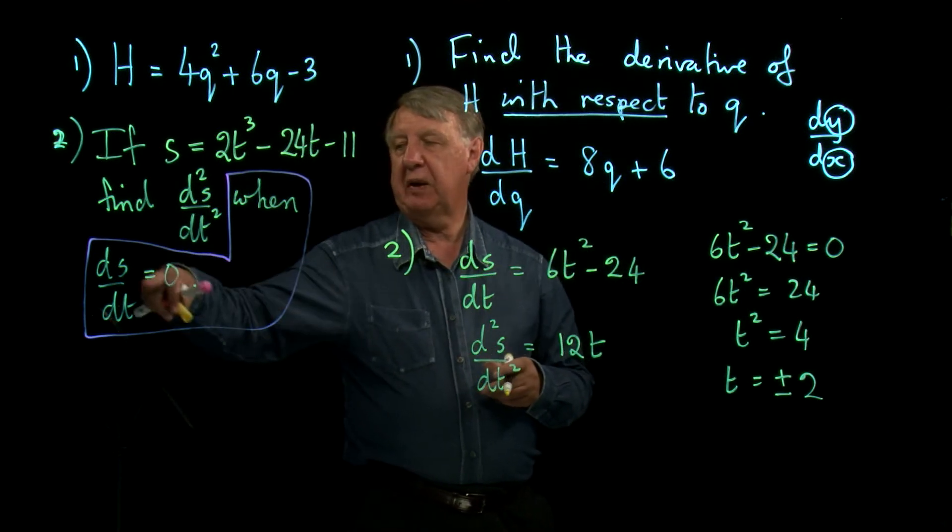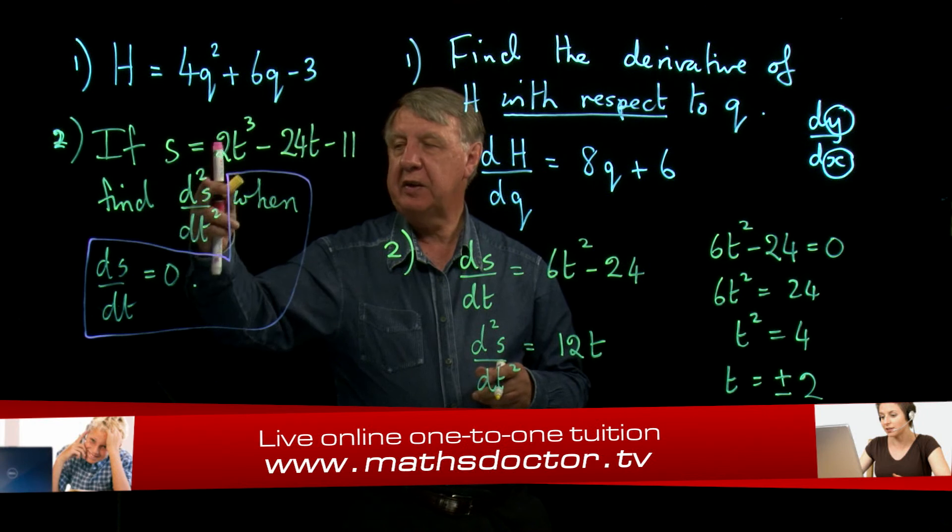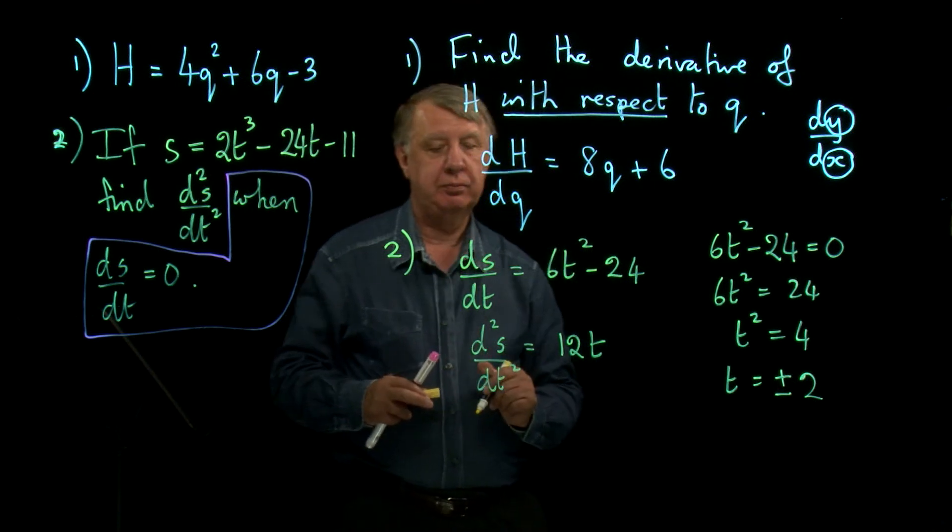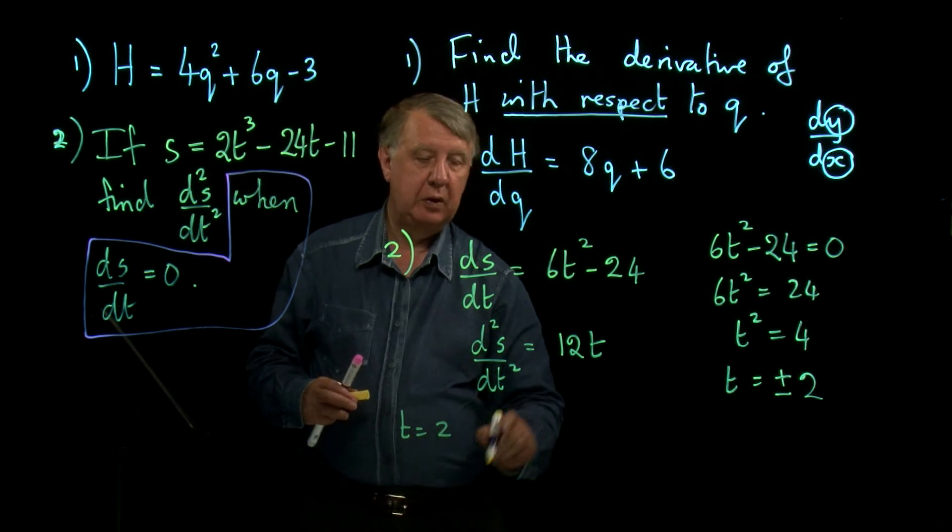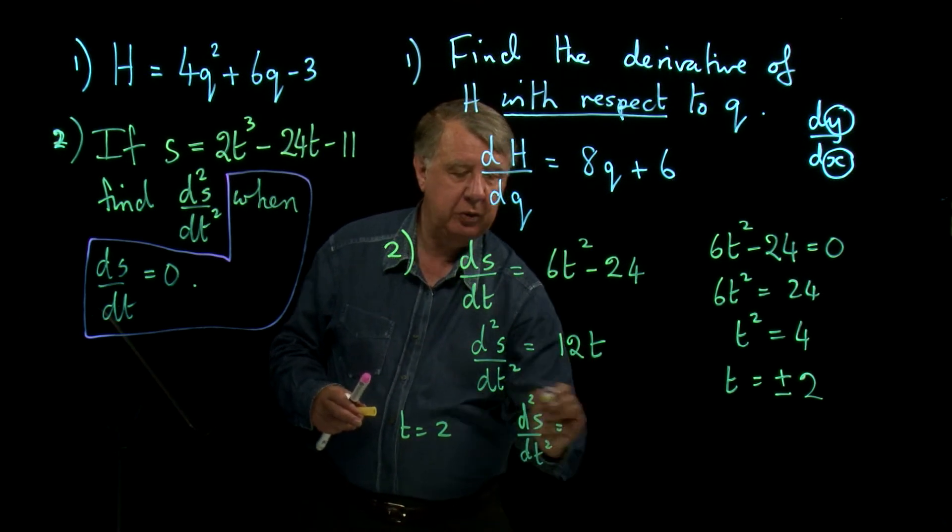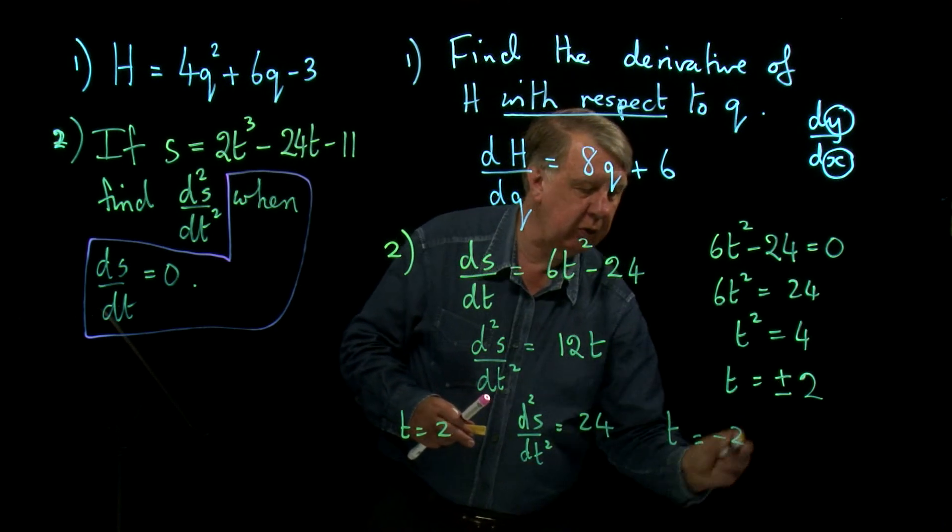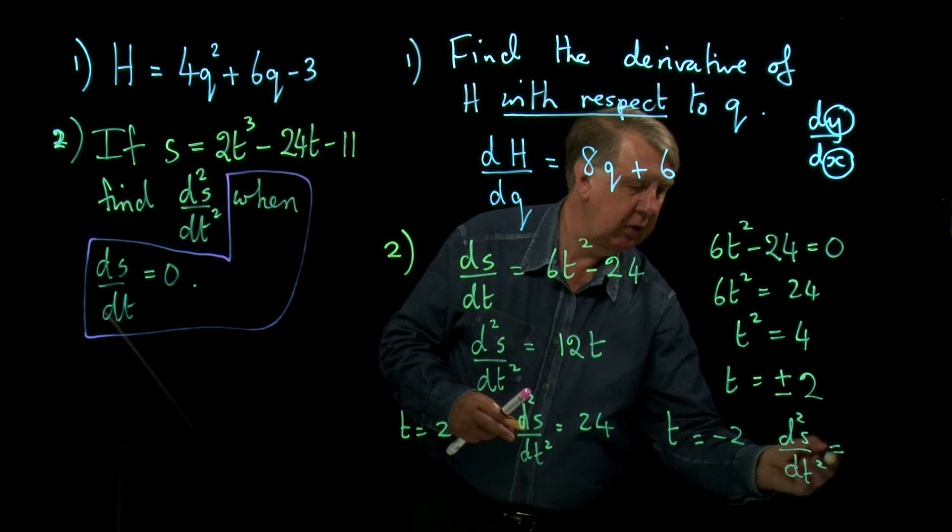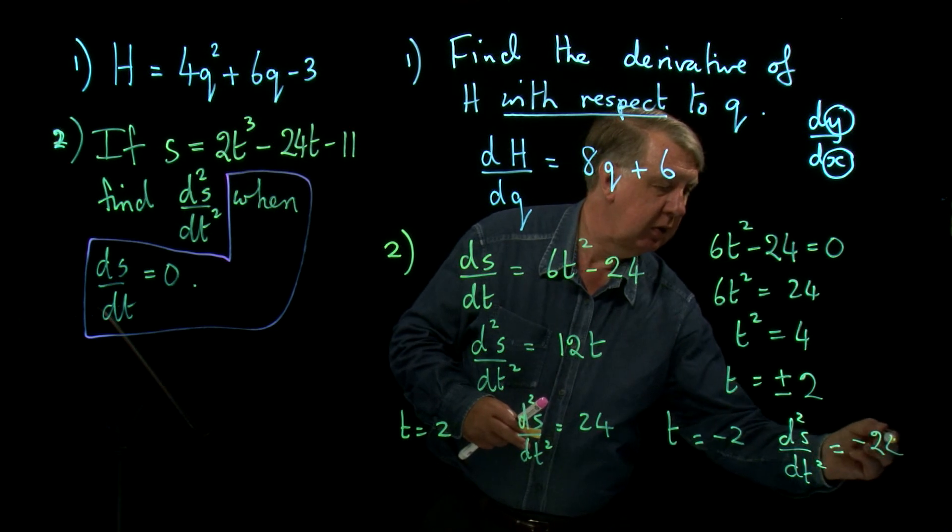So this thing in brackets—what does it actually mean? It means find d²s/dt² when t is plus or minus 2. Well, if t is 2, then d²s/dt² equals 12 times 2, which is 24. And if t equals -2, d²s/dt² equals 12 times -2, which is -24.